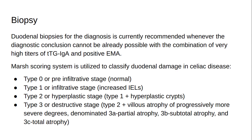The Marsh scoring system is utilized to classify duodenal damage in celiac disease. Type 0, or pre-infiltrative stage, is normal. Type 1, or infiltrative stage, shows increased intraepithelial lymphocytes (IELs). Type 2, or hyperplastic stage, is type 1 plus hyperplastic crypts. Type 3, or destructive stage, is type 2 plus villus atrophy of progressively more severe degrees: 3A partial atrophy, 3B subtotal atrophy, and 3C total atrophy. Patients with positive celiac serology and normal histology are considered to have potential celiac disease.